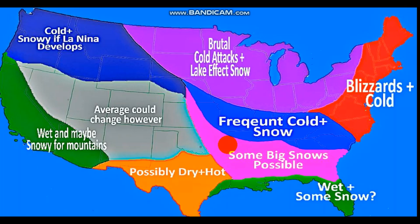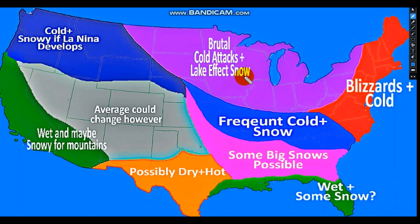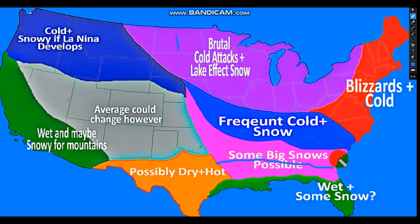Here's my previous winter forecast, which I believe was uploaded around July 21st. I had forecast brutal cold attacks, post-lake-effect snow, blizzards and cold for the Northeast, and possible big snows in the South — maybe not as far south as I originally thought. I've increased confidence on those elements and think the cold will extend further south. The main change is for the West.